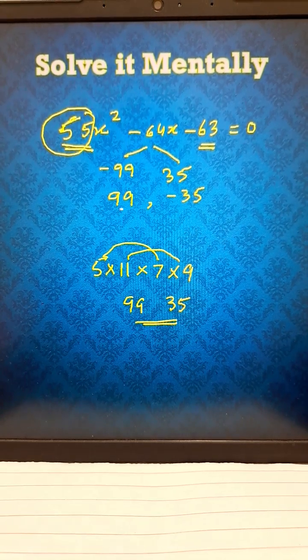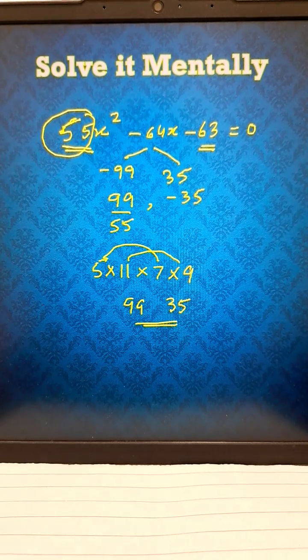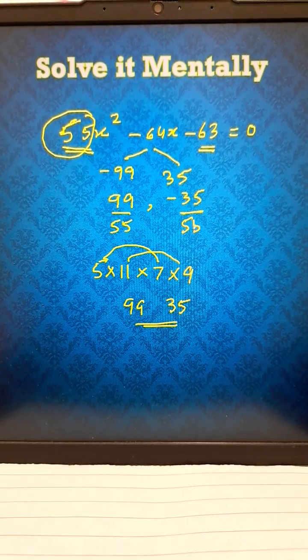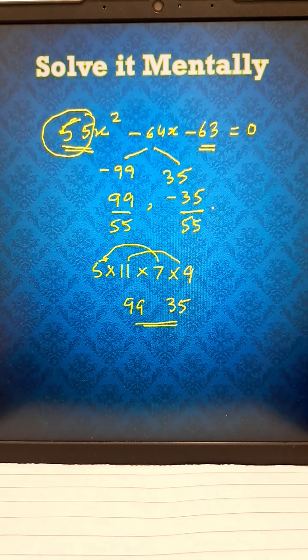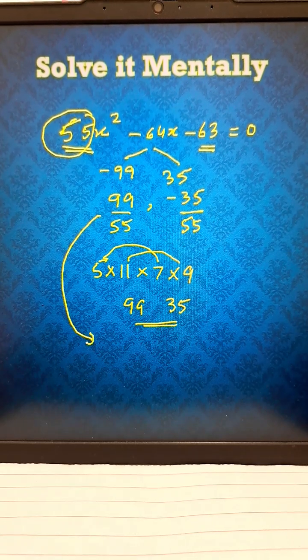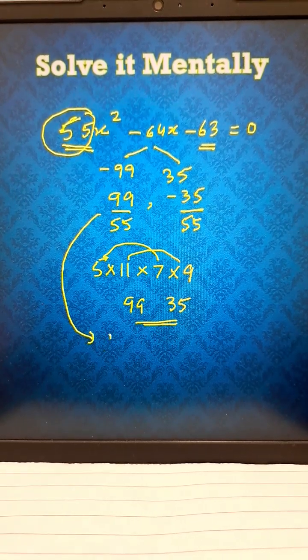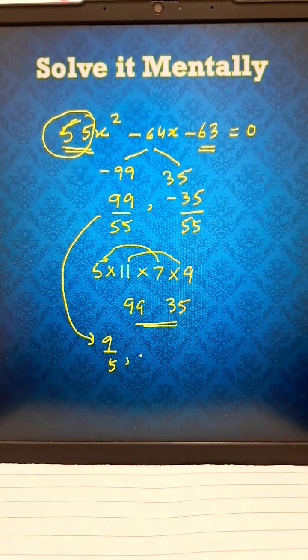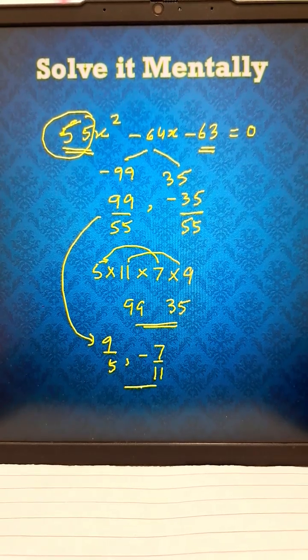And just divide by the coefficient of x², which is 55. You have your two solutions. What are the solutions? The first solution is going to be 9 upon 5, and the second one -7 upon 11. Amazing, right?